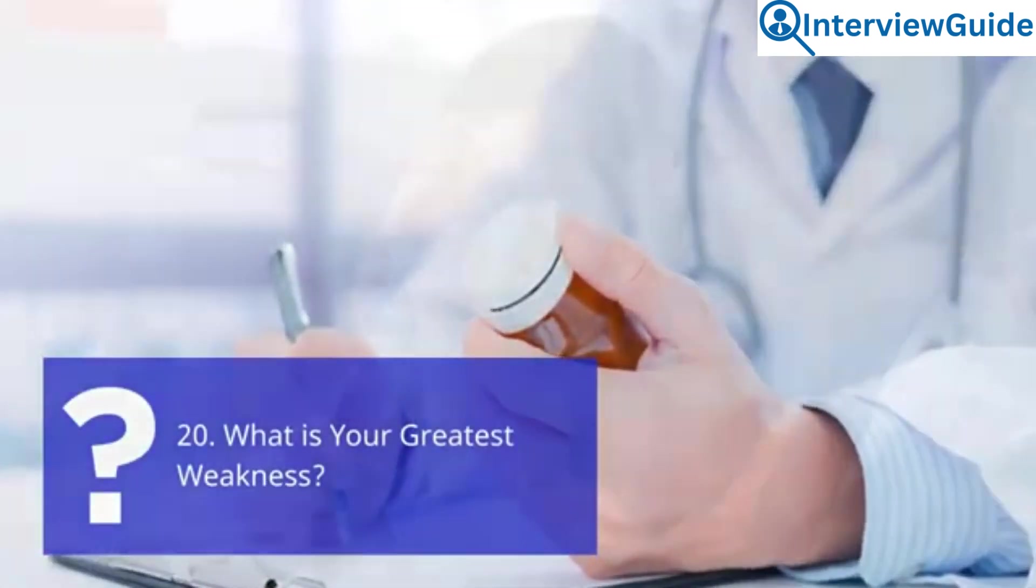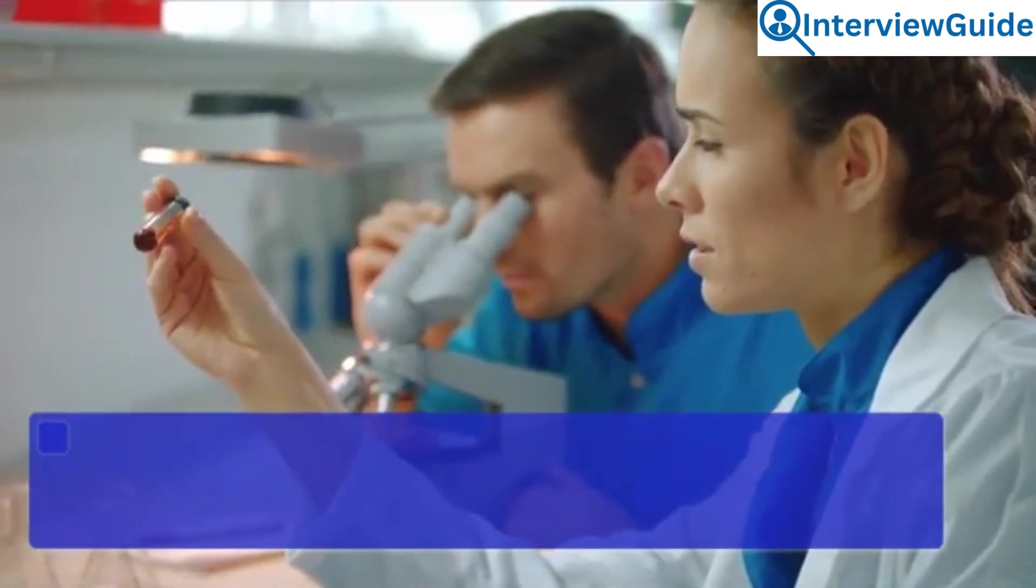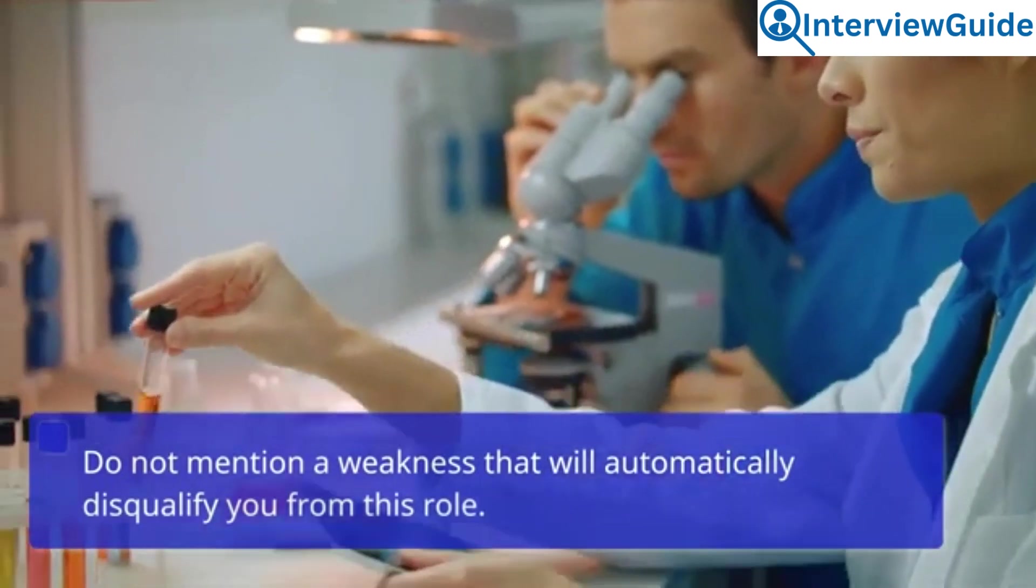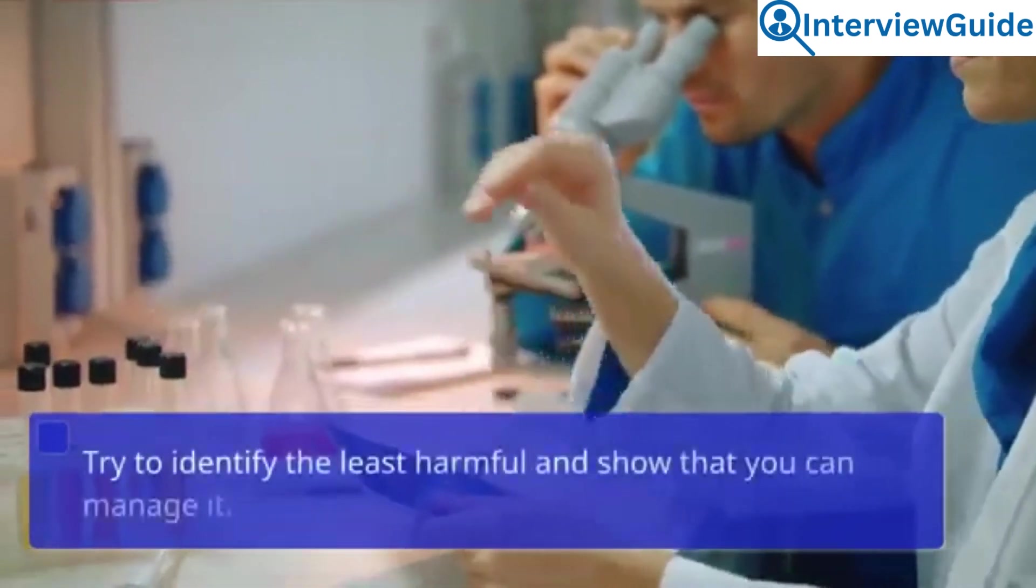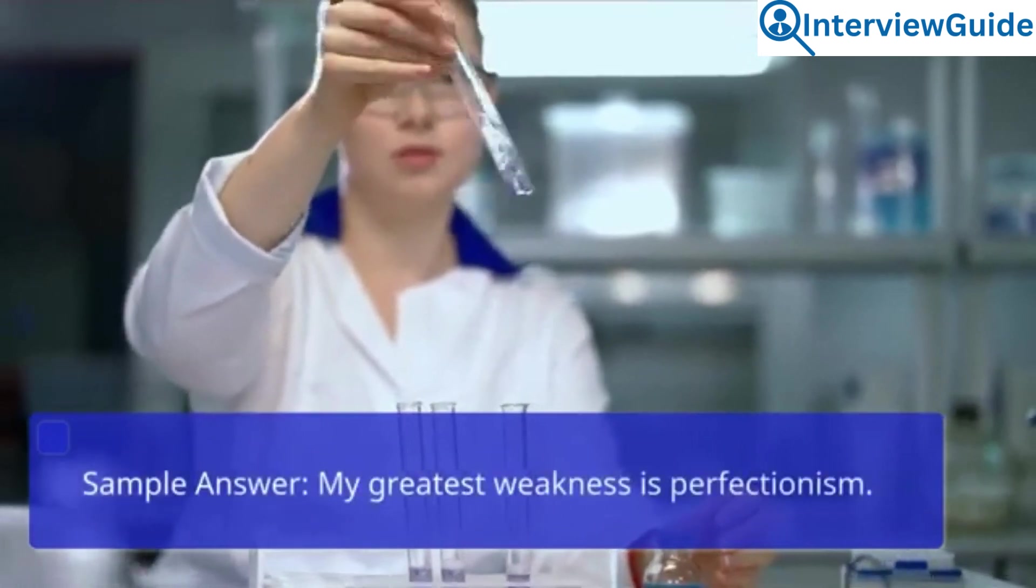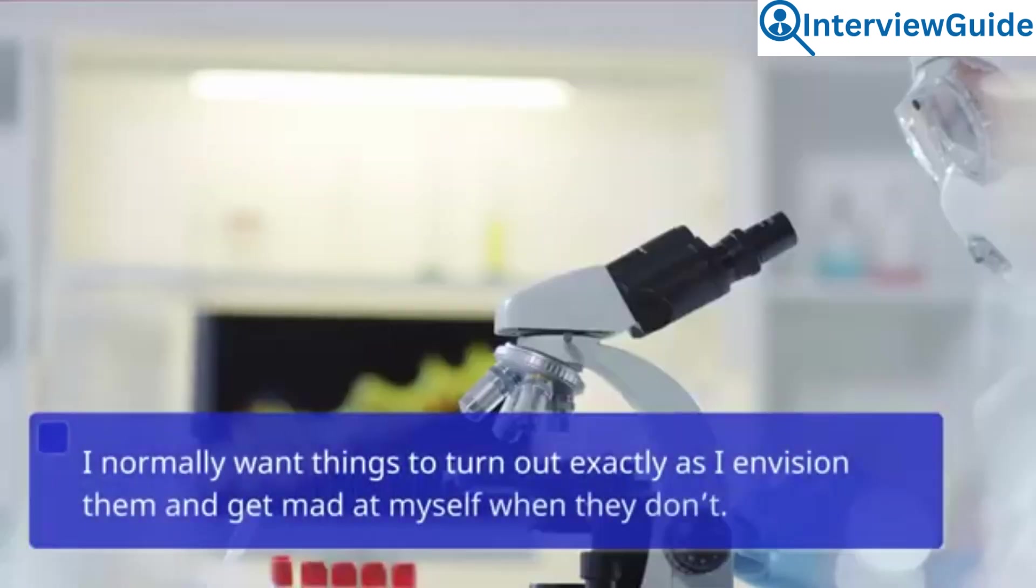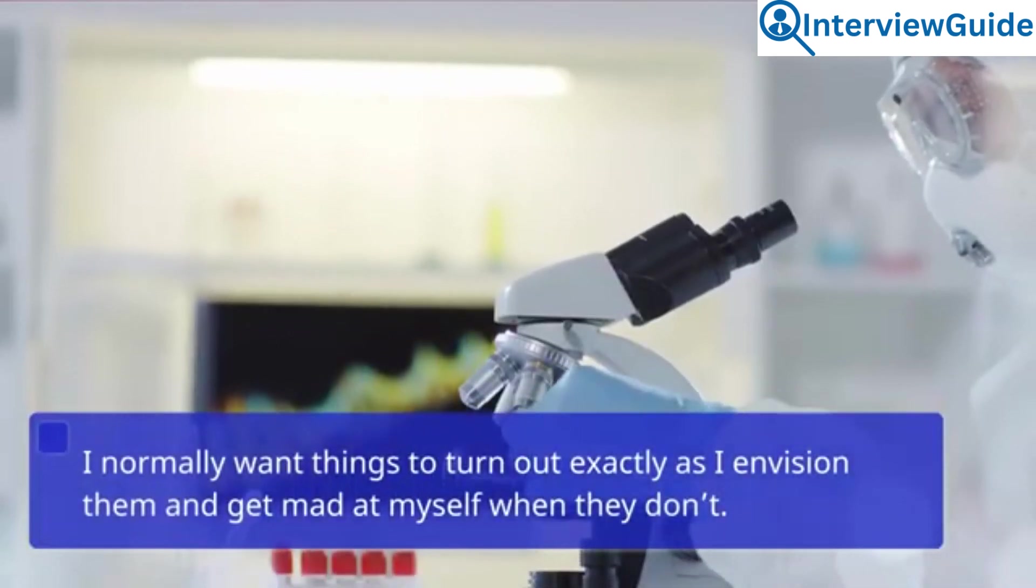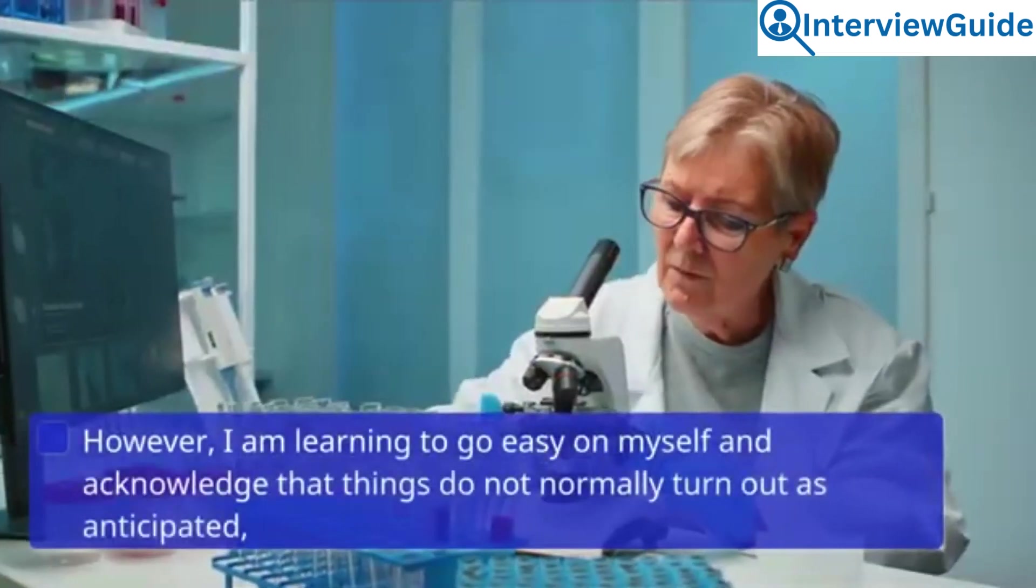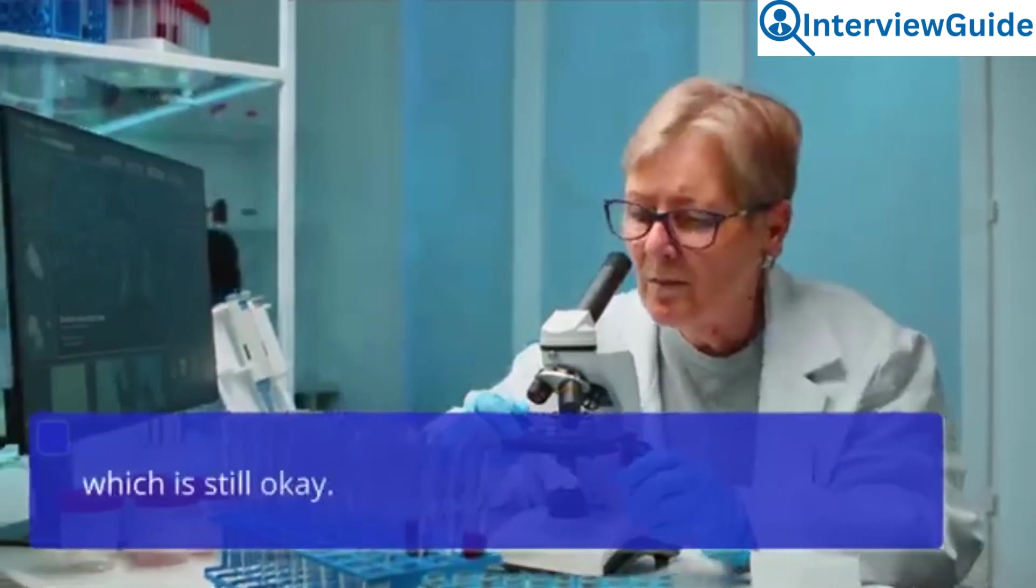Question 20: What is your greatest weakness? It would be best if you were careful when answering this question. Do not mention a weakness that will automatically disqualify you from this role. Try to identify the least harmful and show that you can manage it. Sample answer: My greatest weakness is perfectionism. I normally want things to turn out exactly as I envision them and get mad at myself when they don't. However, I am learning to go easy on myself and acknowledge that things do not normally turn out as anticipated, which is still okay.